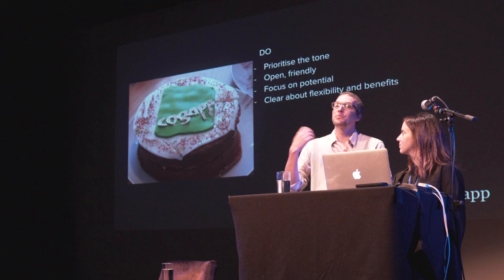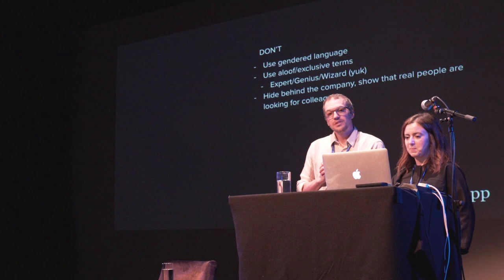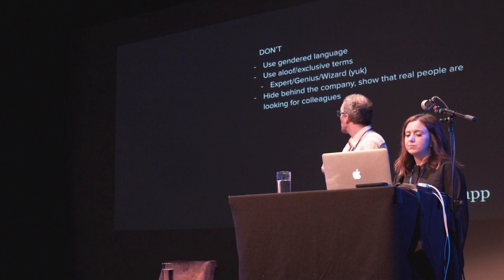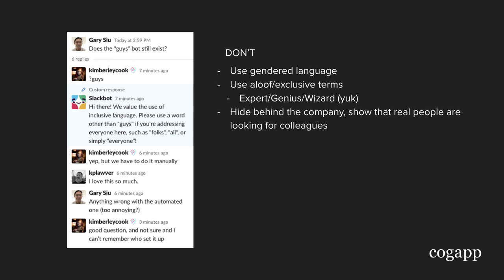Things not to do: using gendered language, or using words like 'expert' and 'wizard' — that's not helpful. A great example of addressing gendered language comes from the Code Bar Slack — they have a 'guys bot', so if anyone says 'guys', a Slack bot automatically says 'hey, we can use inclusive language, don't say guys.' Little things like that make a big difference. You can easily add that to your own Slack — but also add it to your own brain.